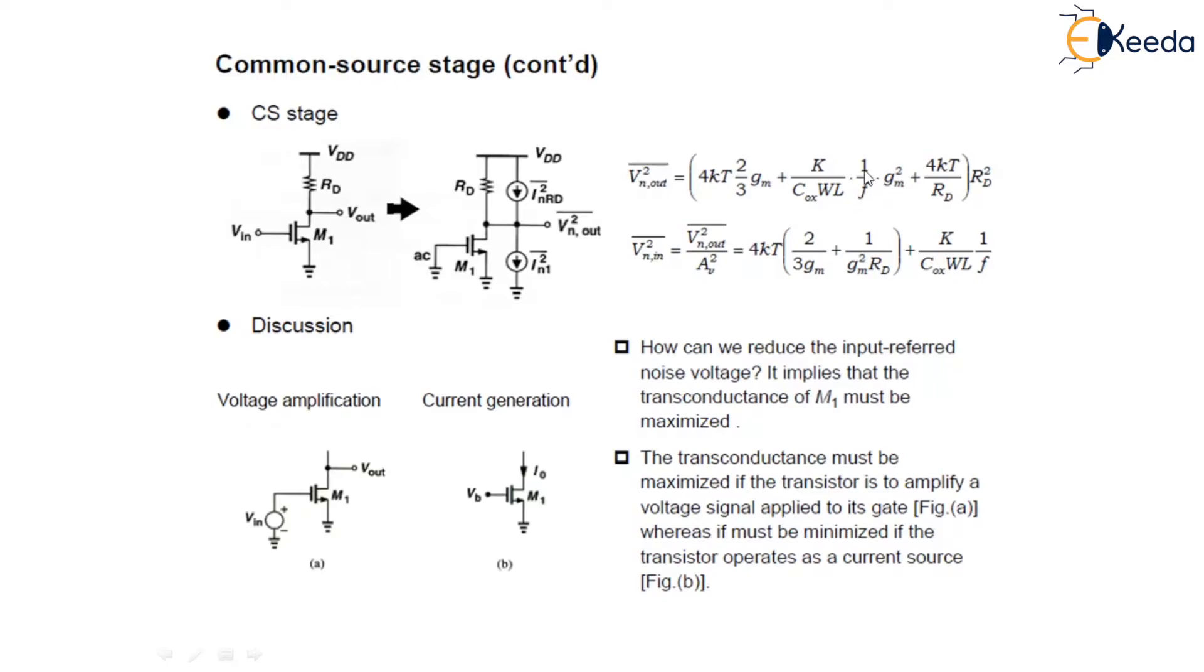And this is simply the flicker noise, the 1 by f noise we also write, and this is the thermal noise due to the resistor. Now we can find the input-referred noise voltage equals output noise voltage upon the gain which will be equals to 4kT times 2 by 3 gm or gamma gm plus 1 by gm squared rd plus k upon Cox W times 1 by f.